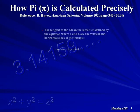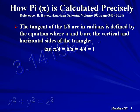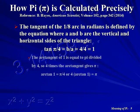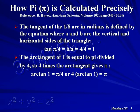The tangent of the one-eighth arc in radians is defined by the equation where A and B are the vertical and horizontal sides of the triangle. Each has a value of 4 centimeters, so the tangent of Pi divided by 4 is 1. To simplify the calculation, we use the arctangent, which is equal to Pi divided by 4.